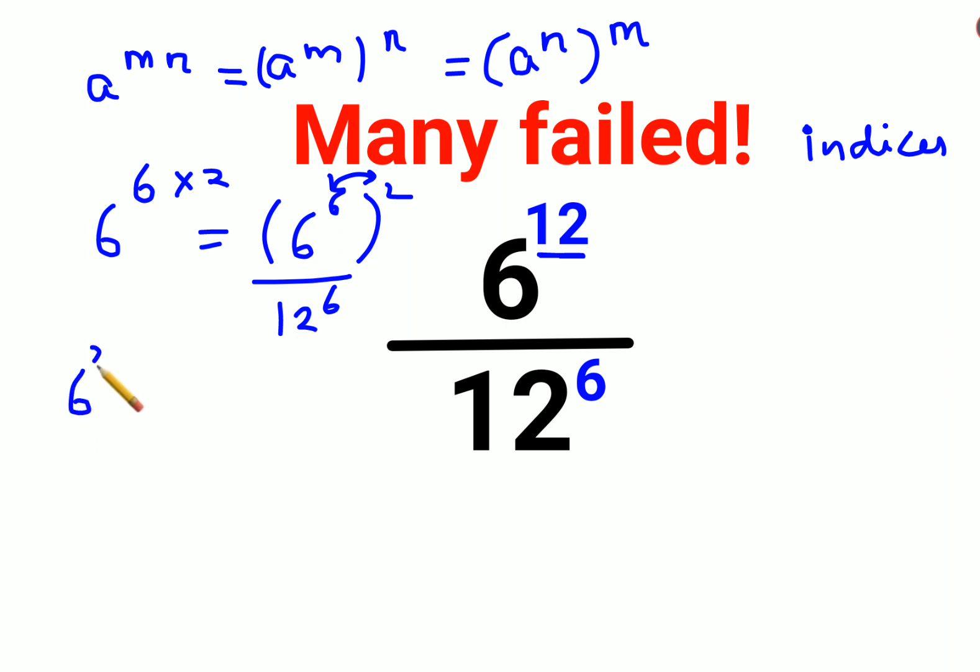So we get this as 6 squared, the whole raised to 6, upon 12 raised to 6. Now this is very interesting—a lot of people don't remember this: a raised to m upon b raised to m can be written as a upon b, the whole raised to m.